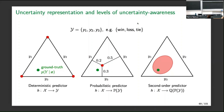This first-level probabilistic predictor is more uncertainty-aware than a deterministic predictor, which just predicts the class — one of the corner points. The calibration problem that Willem spoke about is mainly about how to bring the red point closer to the green point, how to improve probability predictions. That is one way to make the learner more uncertainty-aware.